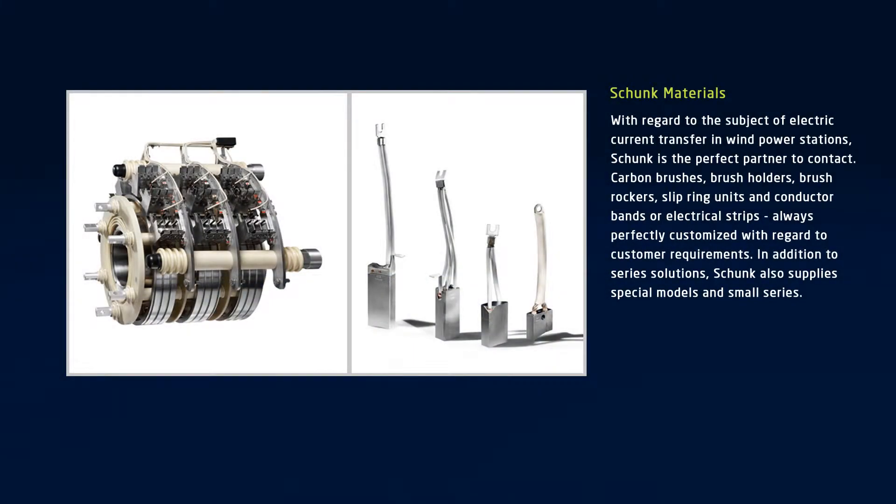Schunk is among the world's leading suppliers for electric current transfer. So that the generators and motors in wind power stations run reliably and efficiently over the long term, Schunk provides carbon brushes, brush holders, brush rockers, slip ring units, and conductor bands or electrical strips. Customized materials combine outstanding electrical and thermal conductivity together with temperature stability. Optimum design ensures high efficiency and cost effectiveness in large or small series or in customer specific special models.